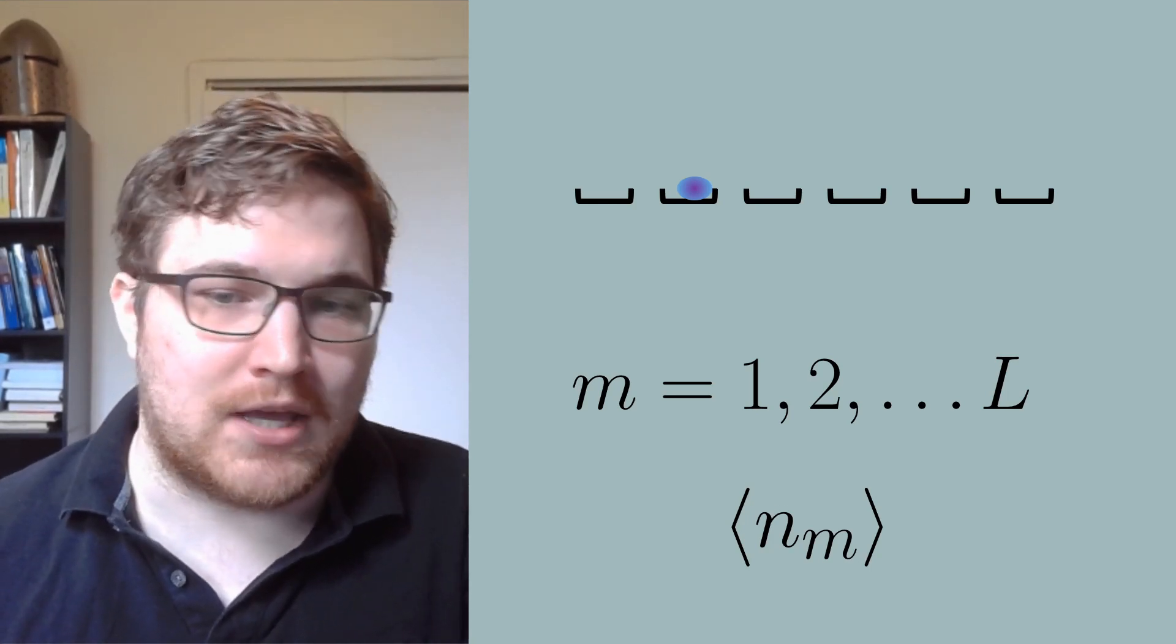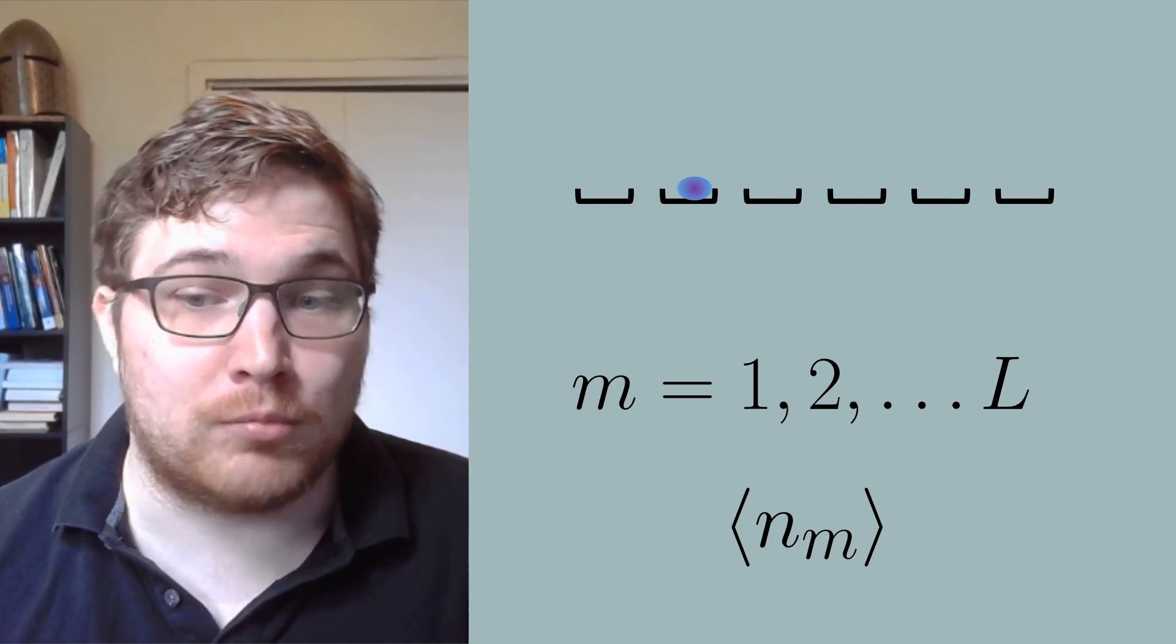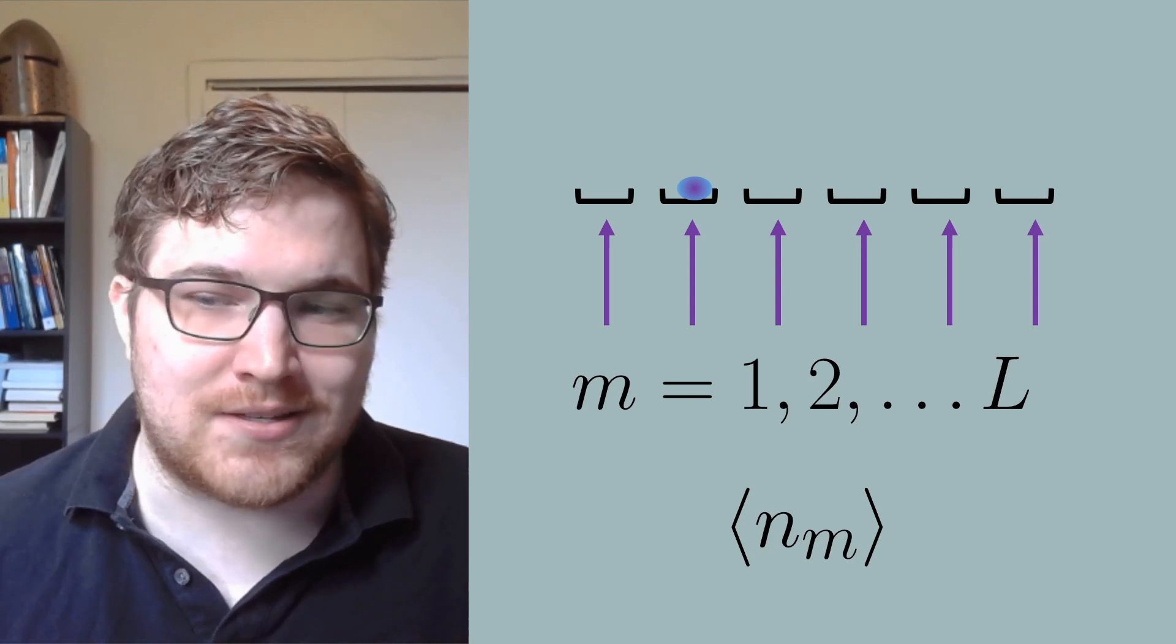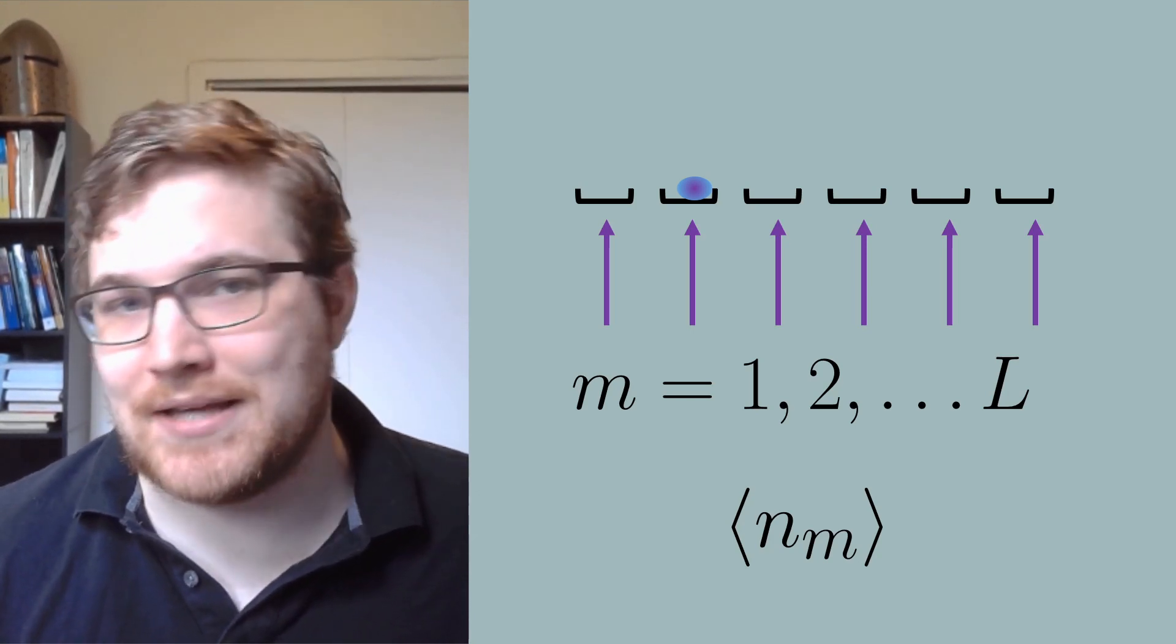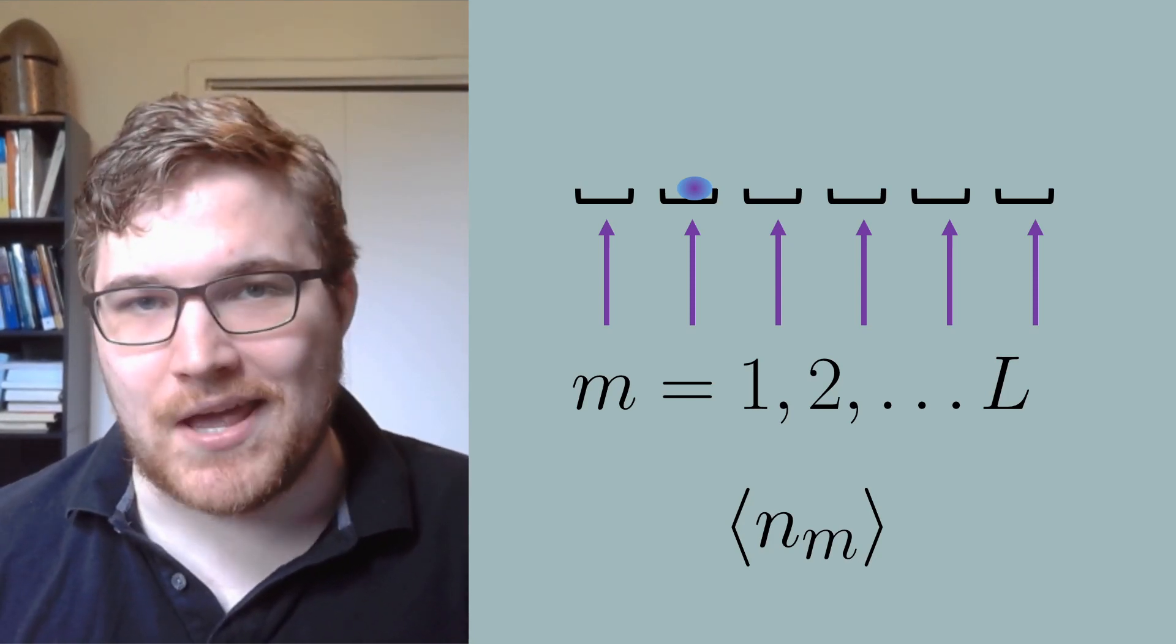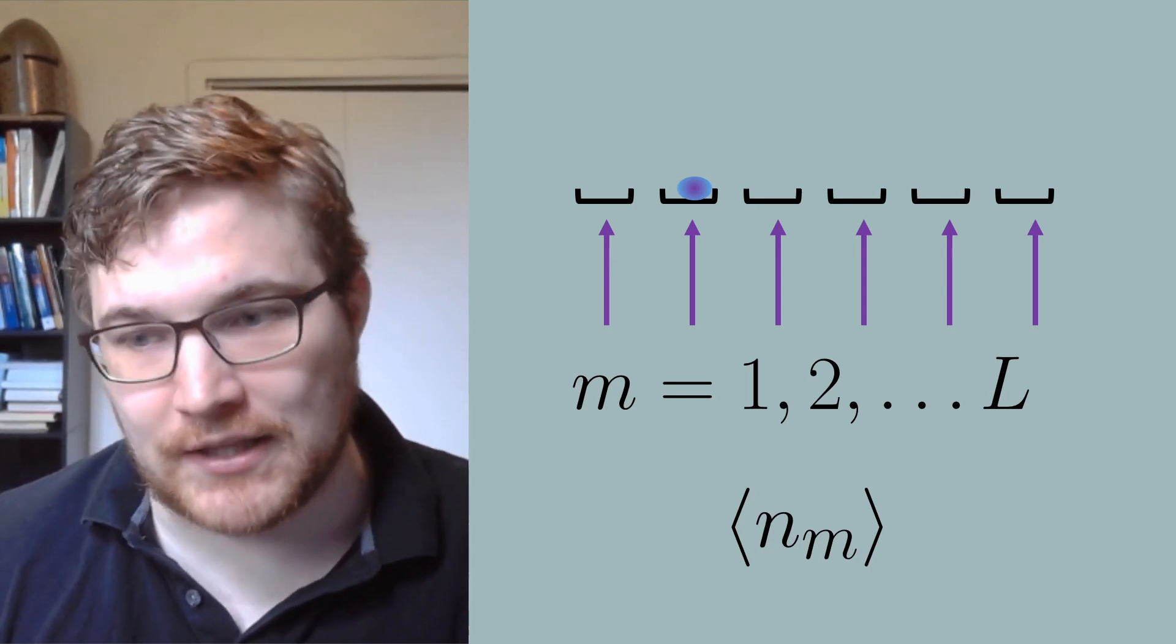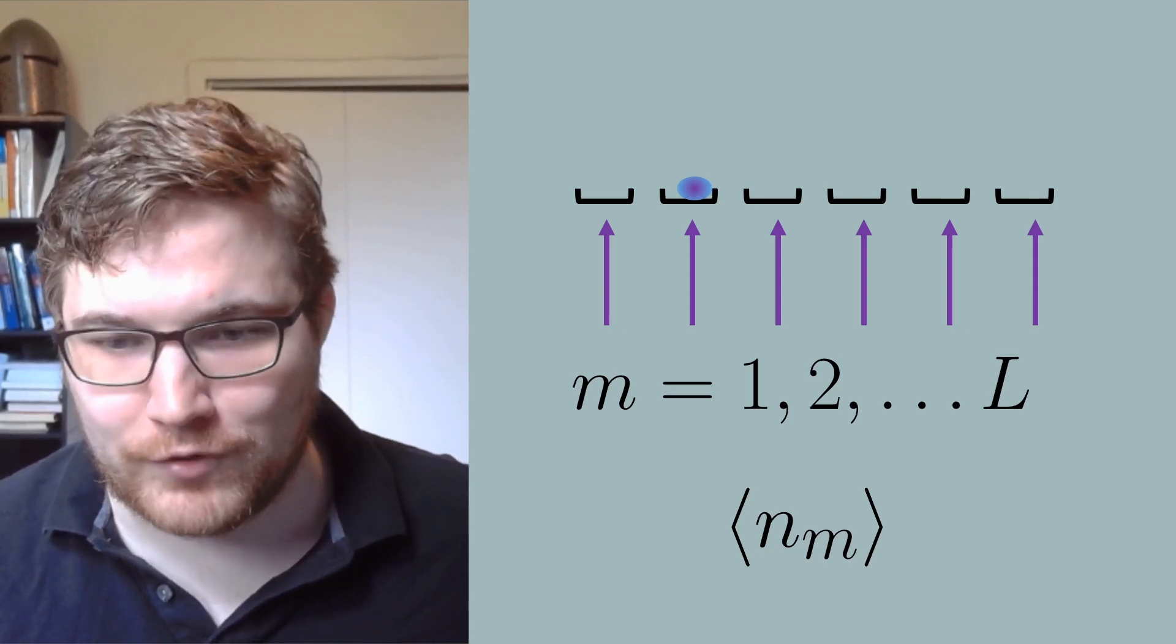We imagine applying some form of a field to the lattice so that there is some energy associated with the electron sitting at a particular site. The simplest example of this would be a uniform field, so that the associated energy of an electron due to sitting on a lattice site is the same everywhere.